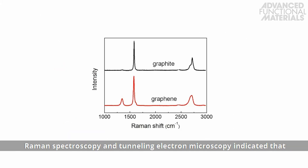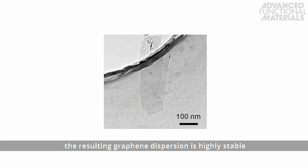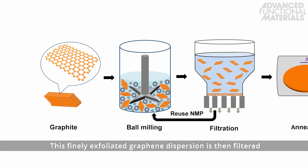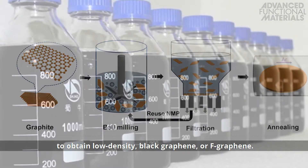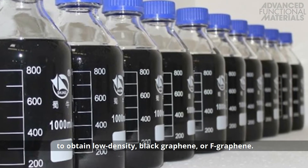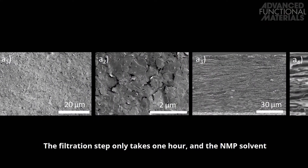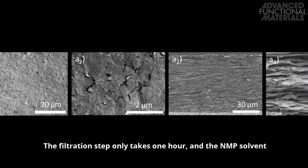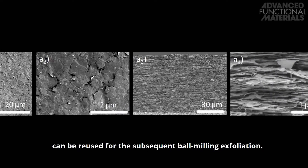Raman spectroscopy and tunneling electron microscopy indicated that the resulting graphene dispersion is highly stable and composed of plain, defect-free, few-layer graphene. This finely exfoliated graphene dispersion is then filtered to obtain low-density black graphene, or F-graphene. The filtration step only takes one hour, and the NMP solvent can be reused for subsequent ball milling exfoliation.